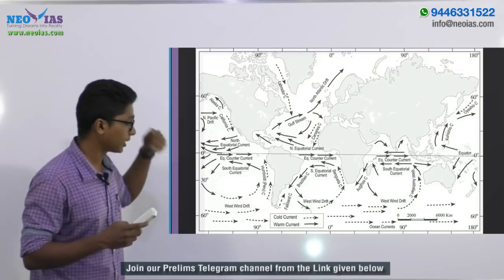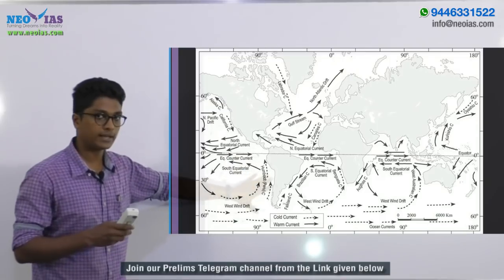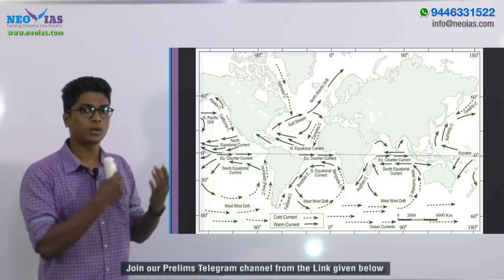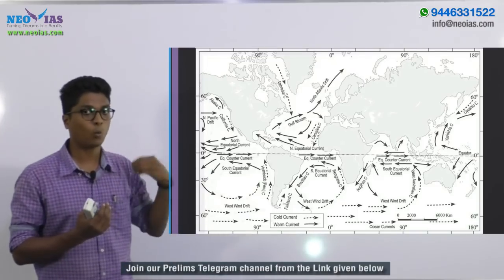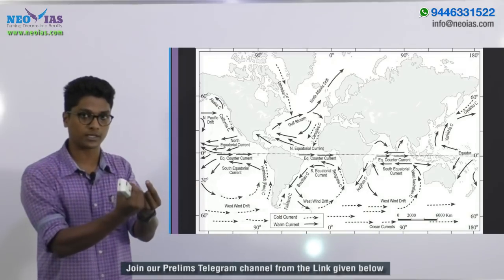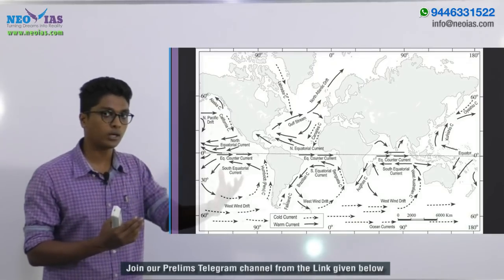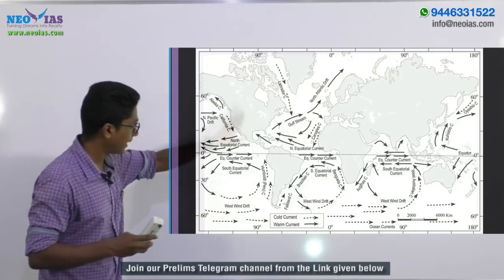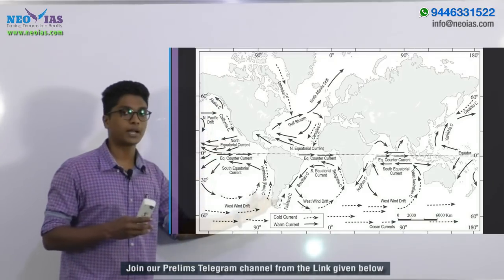That is how cold ocean currents influence the formation of major hot deserts. Cold air is also denser, and denser air won't rise up — it stays near the surface. Just like a hydrogen balloon rises because hydrogen has less density than surrounding air, colder and denser air stays near the surface. For all these reasons, major hot deserts are located along the western margin, influenced by cold oceanic currents.